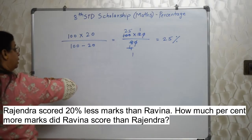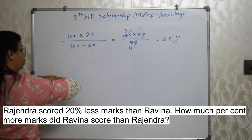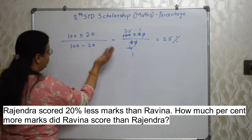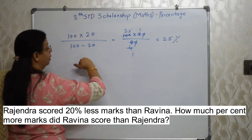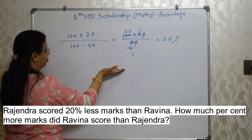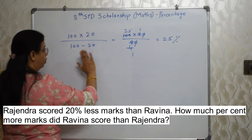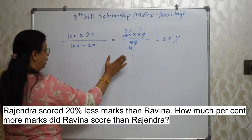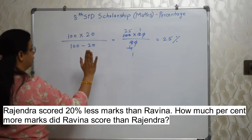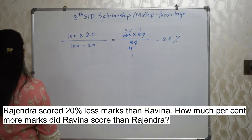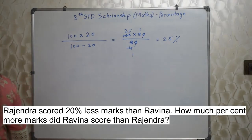When Rajendra has scored 20% less than Raveena, Raveena has scored 25% more than Rajendra. So they are not the same percentages — please be careful here.